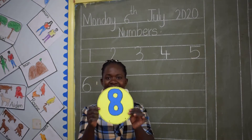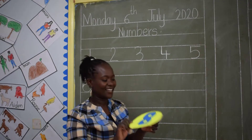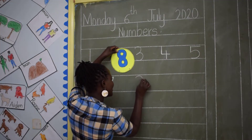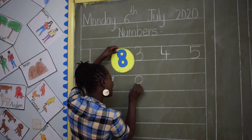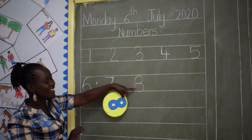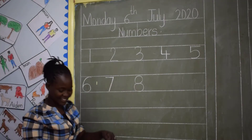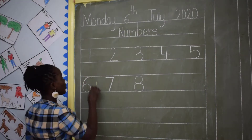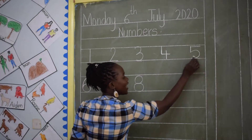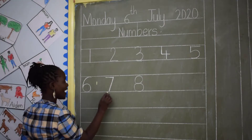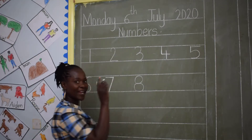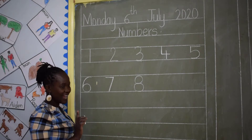This is number 8. This is how we write number 8 — a bowl and another bowl. That is number 8. Count again: 1, 2, 3, 4, 5, 6, 7, 8. Our next number is number 9.